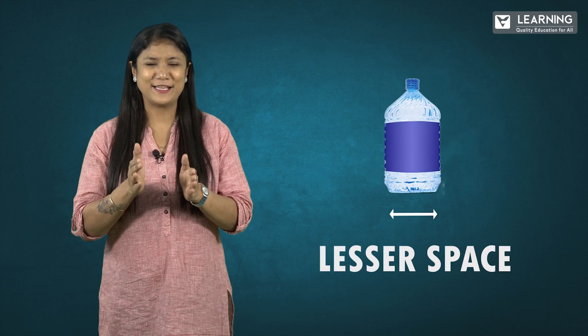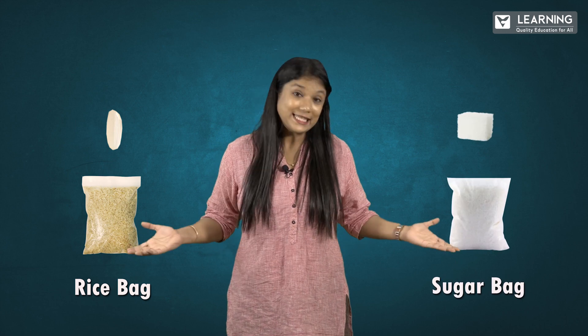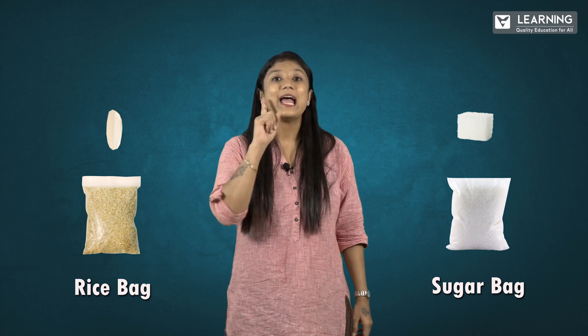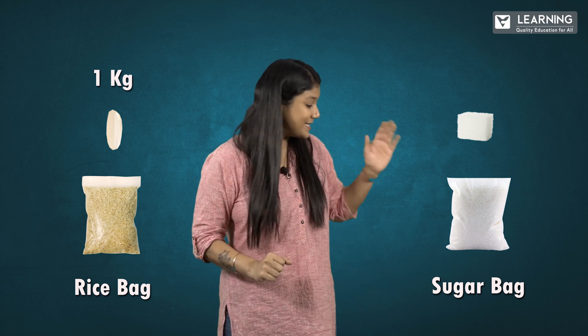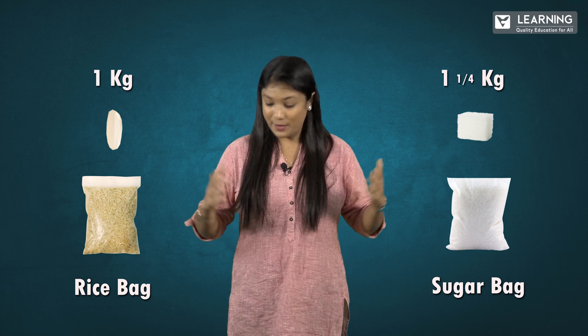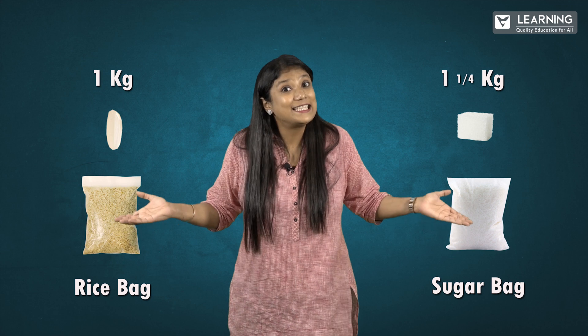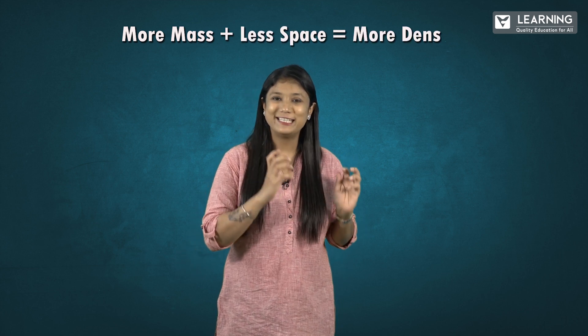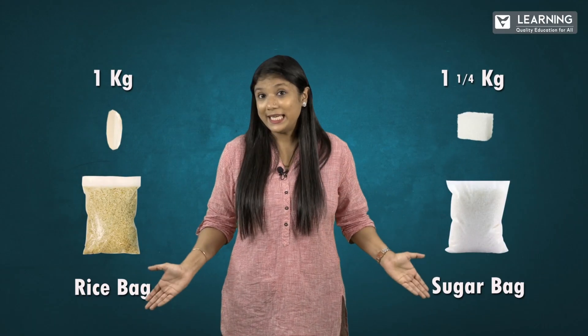Let's try this again. I have a rice bag and a bag of sugar. As you can see, both these bags look the same. Now the rice bag has one kilo of rice, but the sugar bag has one and a quarter kilo of sugar. Among these two, who has the greater density? Let's check our formula: more mass plus less space equals more density. Both bags look the same and occupy the same space.